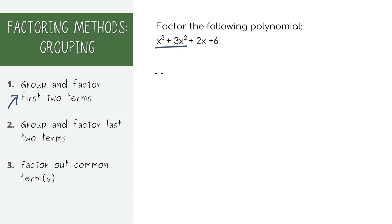Here in our example, it looks like we can pull out an x squared. Now let's group the last two terms. What can we pull out here? You can pull out a 2 and get 2 times x plus 3.